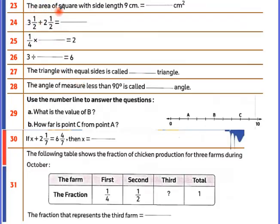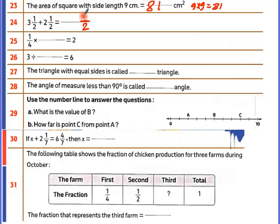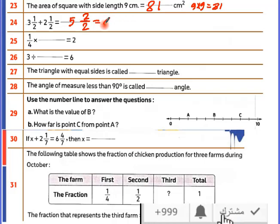The area of a square with side length 9: area equals side times side, so 9 times 9 equals 81. Then 3 and a half plus 2 and a half: fractions have the same denominator 2, numerators 1 plus 1 equals 2, whole numbers 3 plus 2 equals 5. Then 2 over 2 equals 1, whole 1 plus 5 equals 6.